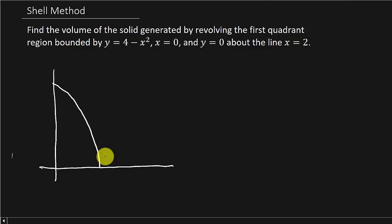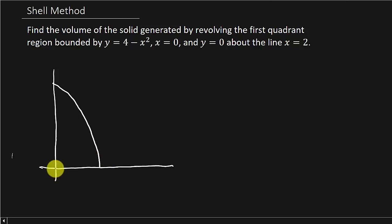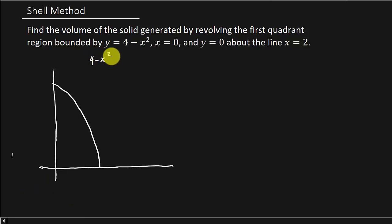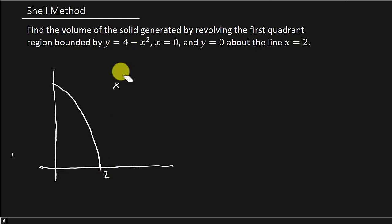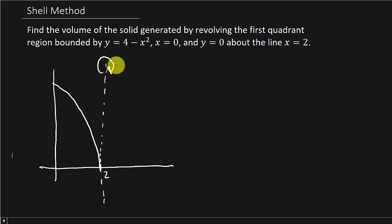Now we want to revolve it about the line x equals 2. We're going to need to know where this graph crosses the axis. So we take 4 minus x squared equals 0, so x squared equals 4, so x equals plus or minus 2. We can see that it crosses the x-axis at x equals 2. Now let's draw in the line x equals 2 — that's right here — and you can see this is the axis we're revolving it about. And we are using the shell method.